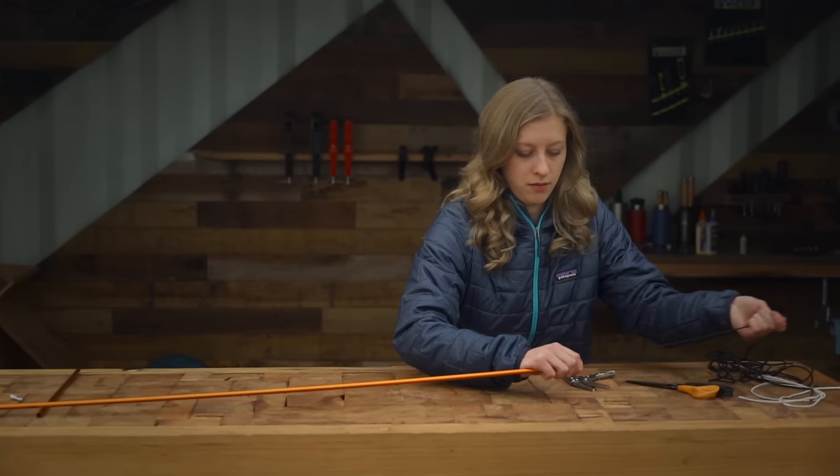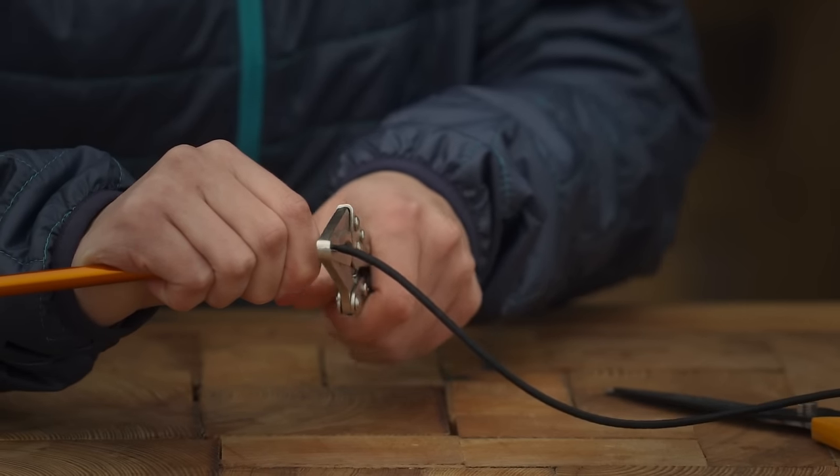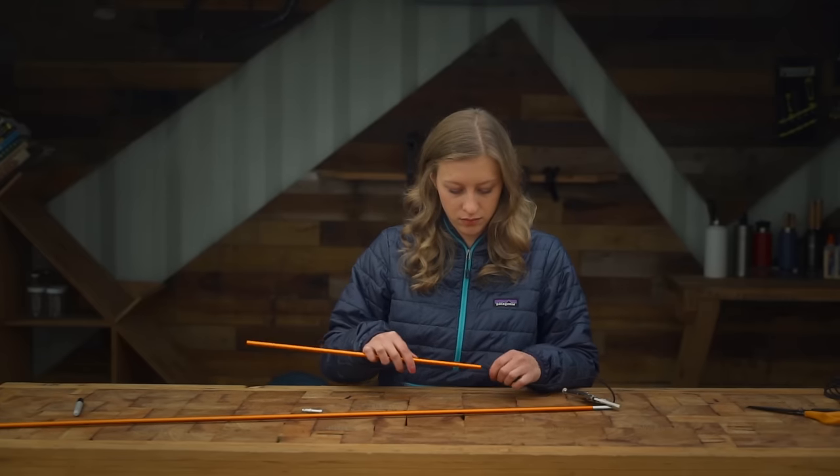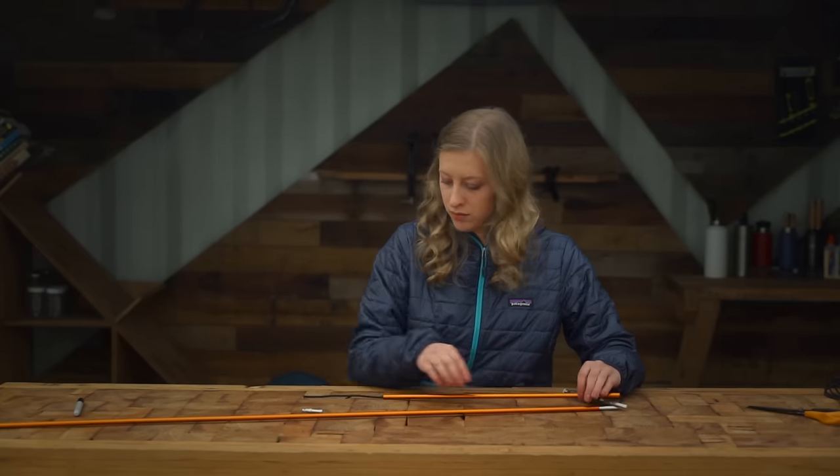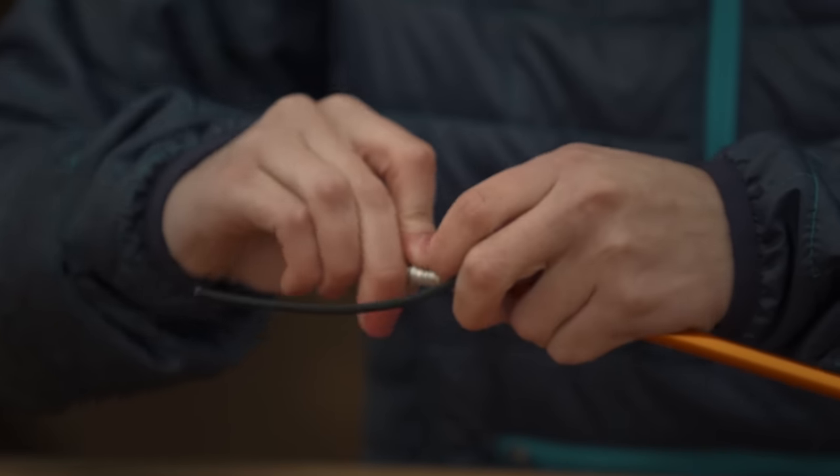Before you thread the final pole section, pull the cord tight and pinch it off with a clamp or vice grip. This way, the final section of cord isn't under tension while you're working with it. Finish up by attaching the cord to the pole tip and tying off the loose end.